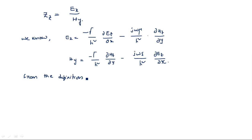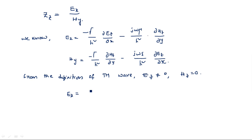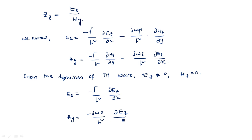From the definition of TM wave — transverse magnetic — the wave is perpendicular to the magnetic field, meaning H_Z equals zero and E_Z is non-zero. Substituting these values, E_X becomes minus gamma over H-squared times ∂E_Z/∂x, and H_Y becomes minus j·ω·ε over H-squared times ∂E_Z/∂x.